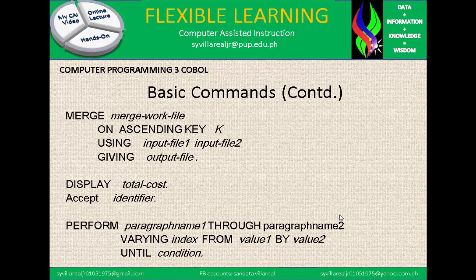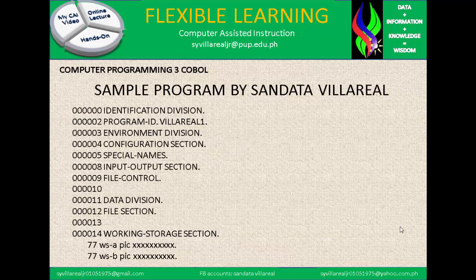Basic commands continued: MERGE WORK-FILE ON ASCENDING KEY USING INPUT-FILE-1, INPUT-FILE-2 GIVING OUTPUT-FILE. DISPLAY TOTAL-COST. ACCEPT identifier — if you want to have input from the keyboard, your code is ACCEPT. If you want to display a series of text or numbers on the screen, the code is DISPLAY. PERFORM PARAGRAPH-NAME-1 THROUGH PARAGRAPH-NAME-2 VARYING INDEX FROM VALUE-1 BY VALUE-2 UNTIL CONDITION — this is something like a conditional statement.